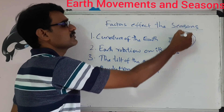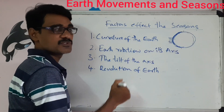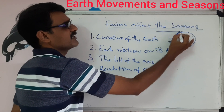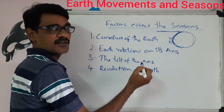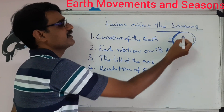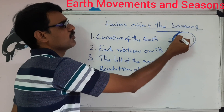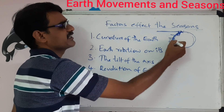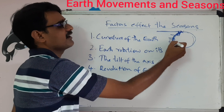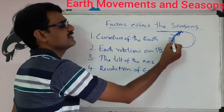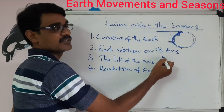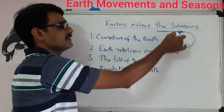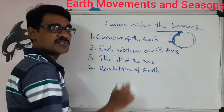Generally, the equatorial region receives sunlight directly, so it receives more heat. When we compare to the north and south poles, because of the curvature, the sun rays are traveling a greater distance and the occupied area is also more. Due to that, the intensity of sun rays is greater at the equator than at the poles.